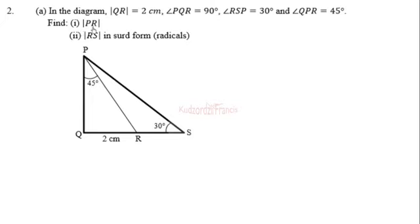We are asked to find PR. We were given QR as 2 centimeters and angle QPR as 45 degrees, and we're also given that angle PQR is 90 degrees. We use a trigonometric ratio that will involve QR, which is opposite to the 45 degrees angle, and also the side we want to find, PR. Since we have opposite and hypotenuse, that will be the sine ratio.